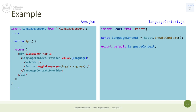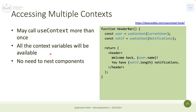Regarding why we accessed multiple contexts with dot notation — yes, it was an object in those contexts. You can imagine the user context value as an object with a name, surname, and email address. The notification context value could be an array with a length and individual notifications — that's up to the developer. So in that case both values are objects, not just strings.